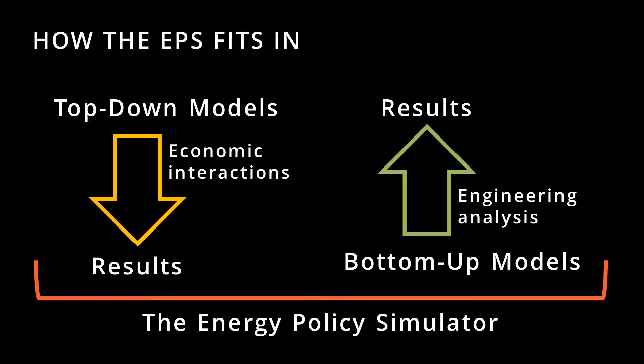For the most part, the EPS attempts to replicate the important interactions in the energy system, tracking flows of specific things such as vehicles, energy, and money. It does not assume that the system is in equilibrium or that actors are rational, nor does it assume that technical potentials are fully achieved. It attempts to use whatever structure would produce the most realistic estimate of real-world policy effects. The necessary structure varies considerably from economic sector to sector.